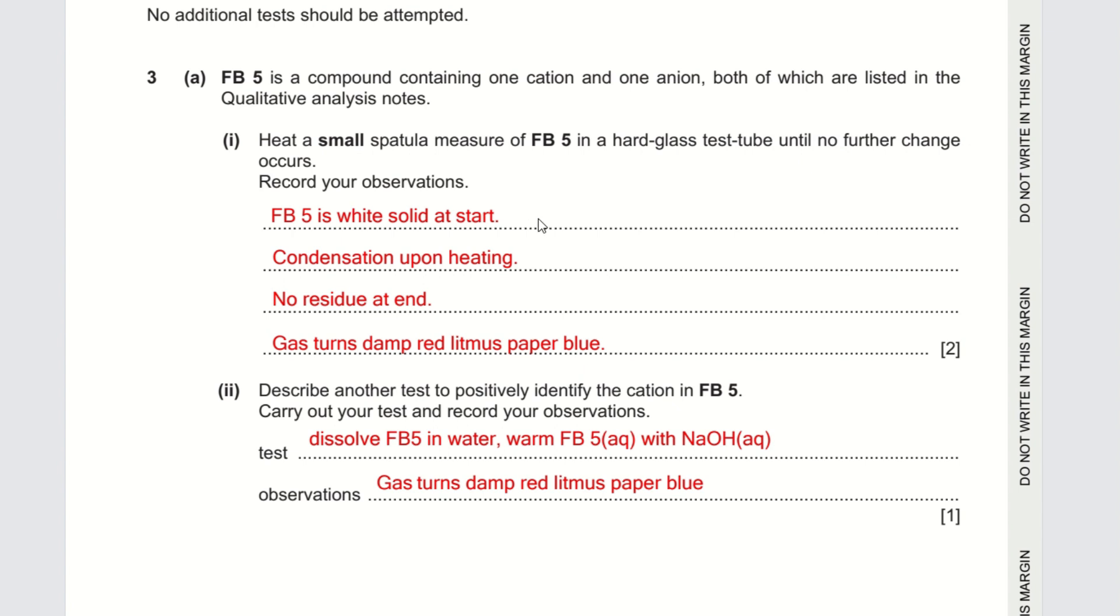This is the first question you ask yourself before you heat the solid. Second is does it melt? If there's no melting, you do not have to record anything about melting. Third question will be is there condensation of steam? If there are water droplets near the top of the boiling tube, then write down condensation upon heating, heating of FB5.